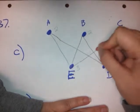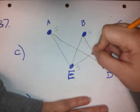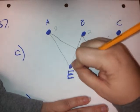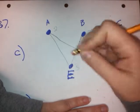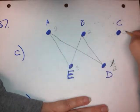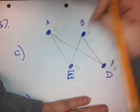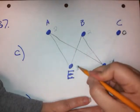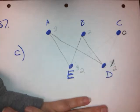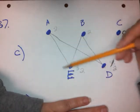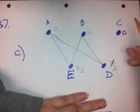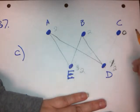The problem is now we've got a degree 1 vertex — this one is odd, and this one is still odd. But we can take care of that by getting rid of this edge. Now that we've gotten rid of this edge, this vertex is degree 0, which is not odd, and this one is now degree 2. So I have all even degrees, achieved by removing two edges from the graph.